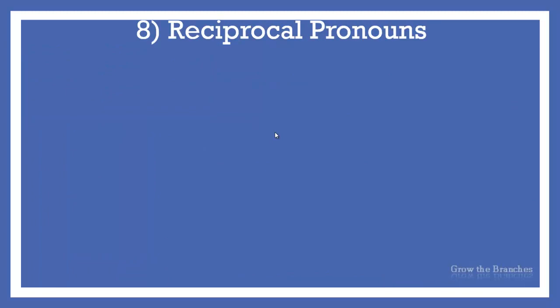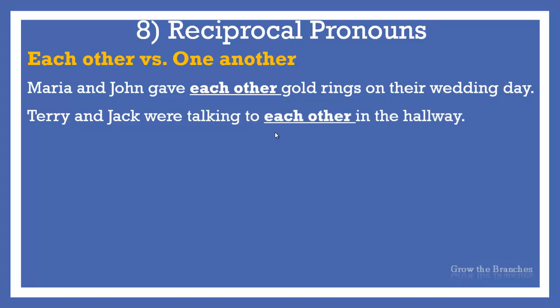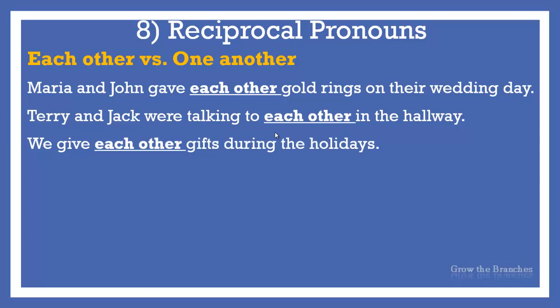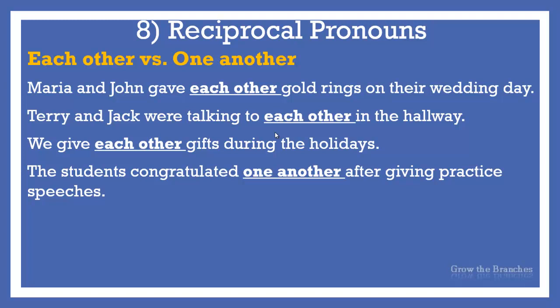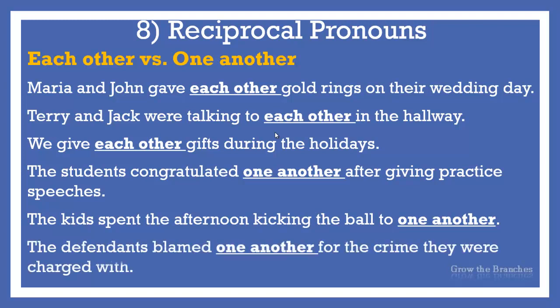Finally, reciprocal pronouns. There are only two reciprocal pronouns — both of them allow you to make sentences simpler. They are especially useful when you need to express the same general idea more than once: each other and one another. When you want to refer to two people, you will normally use each other; when referring to more than two people, you will normally use one another. For example: Maria and John gave each other gold rings on their wedding day. Terry and Jack were talking to each other in the hallway. We give each other gifts during the holidays. The students congratulated one another after giving practice speeches. The kids spent the afternoon kicking the ball to one another. The defendants blamed one another for the crime they were charged with.